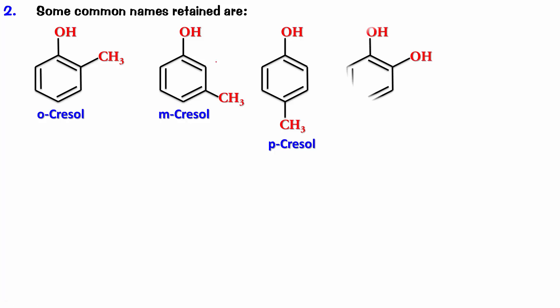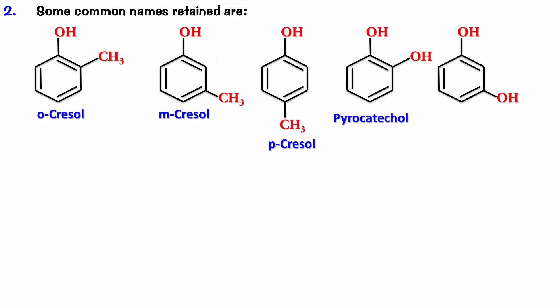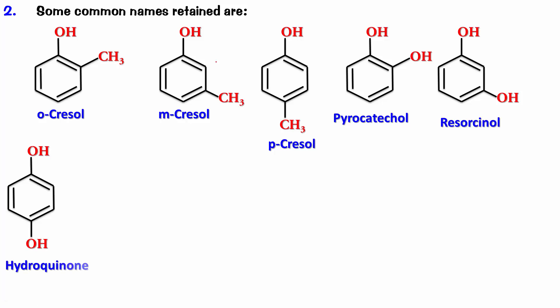2-hydroxyphenol has the common name pyrocatechol. When the two OH groups are in the meta position — one carbon between them — it's 3-hydroxyphenol, also called resorcinol. In the para version, with two carbons between the carbons holding the OH groups, it's 4-hydroxyphenol, also called hydroquinone. These are common names retained as IUPAC names.